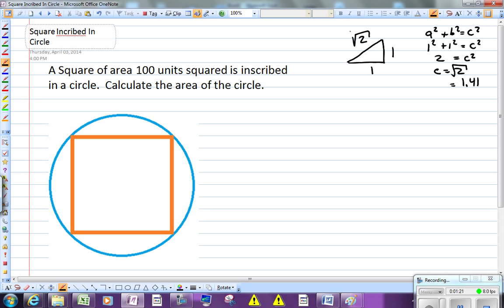Now another concept in this particular problem that's useful is when you look at the square, you can see that the diagonal is going to be the same as the diameter of the circle. So let's look at this. You're told that the area of the square, which is the length squared because those two sides are the same length, is 100.